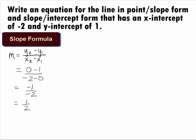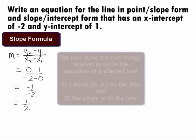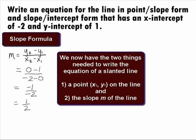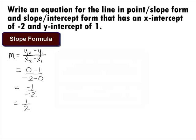So we are looking for a line that passes through the points negative 2, 0 and 0, 1 and has a slope m equal to 1 half. It now looks like we have all the information we need. Let's go ahead and put this into the point-slope form.